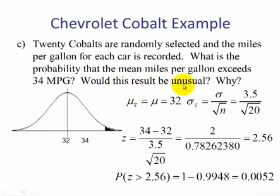Is this result unusual? Yes — this is less than 5%, it's a very small number. So as the sample size increases, the probability of getting values that are far away from the mean becomes smaller and smaller.